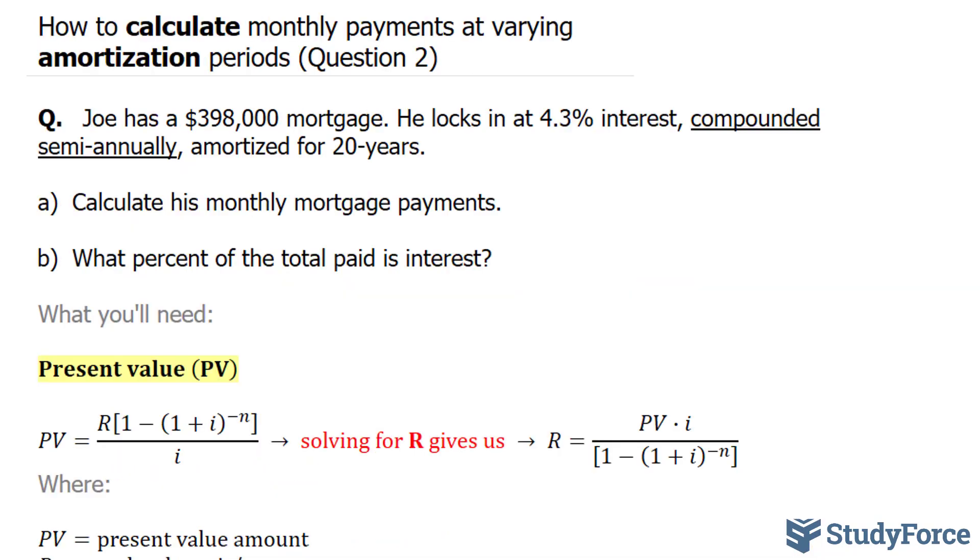Let's write down everything we know so far. We know Joe is borrowing $398,000, so therefore that is the present value. The present value is $398,000.